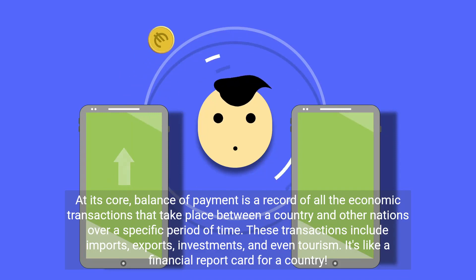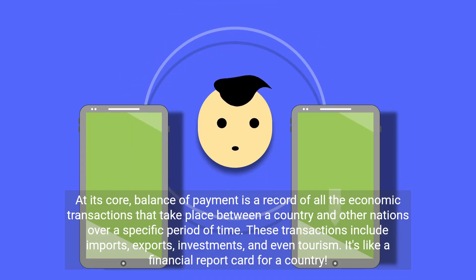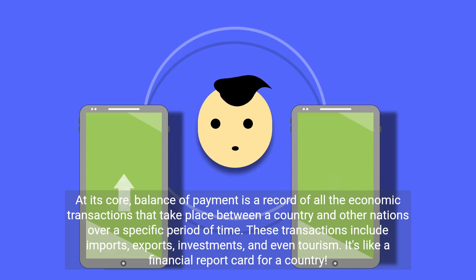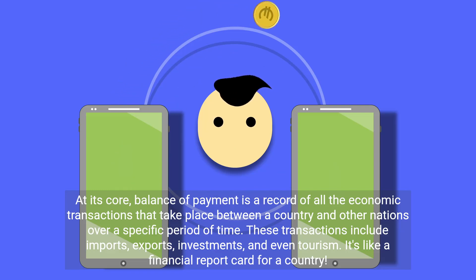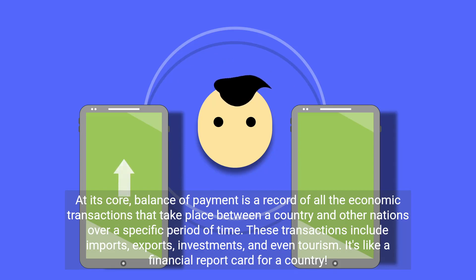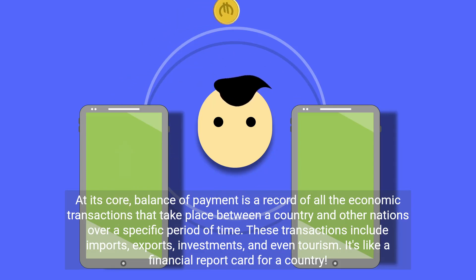At its core, balance of payment is a record of all the economic transactions that take place between a country and other nations over a specific period of time. These transactions include imports, exports, investments, and even tourism. It's like a financial report card for a country.